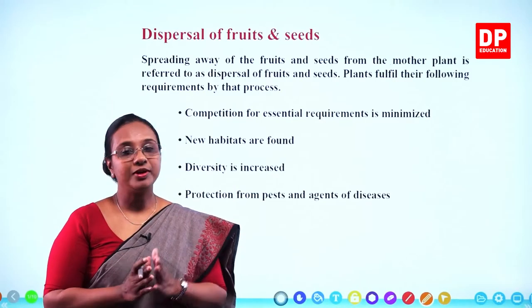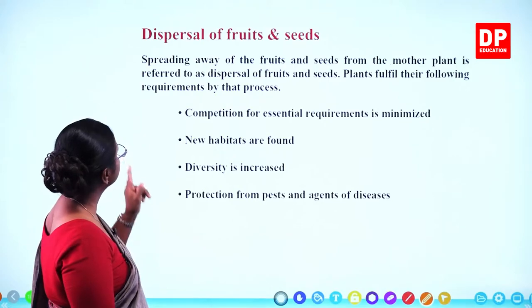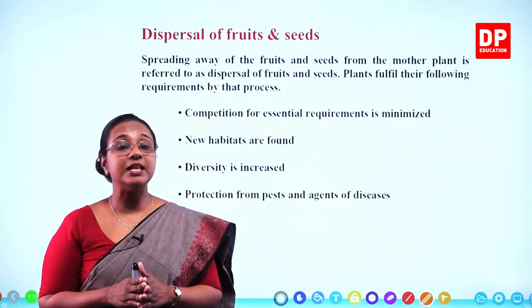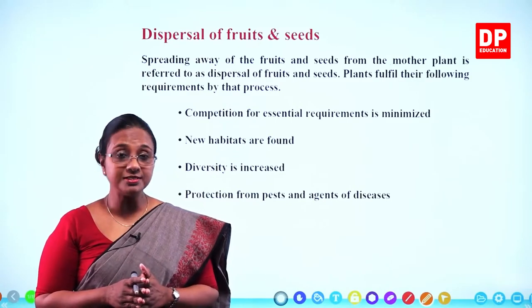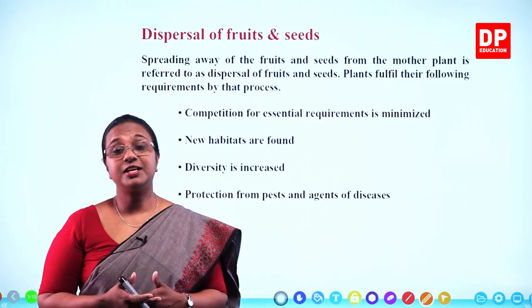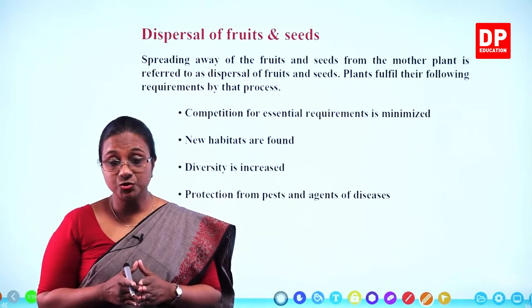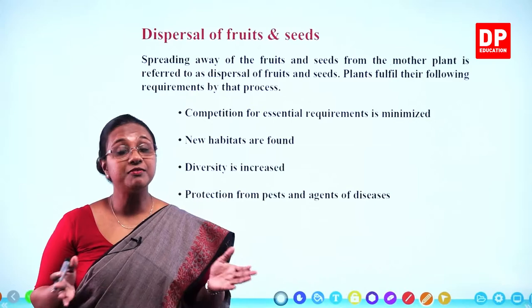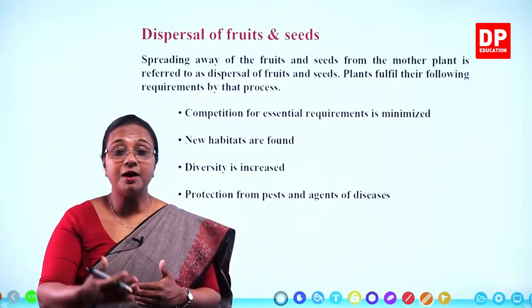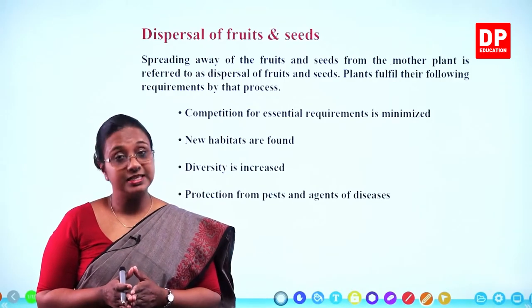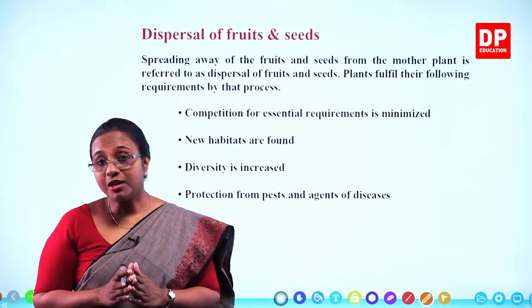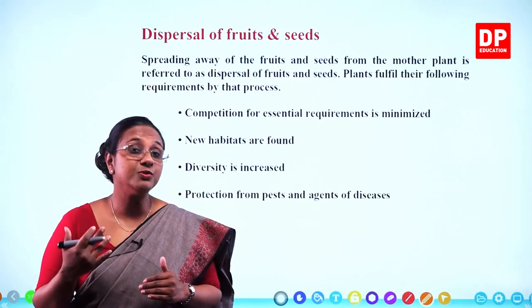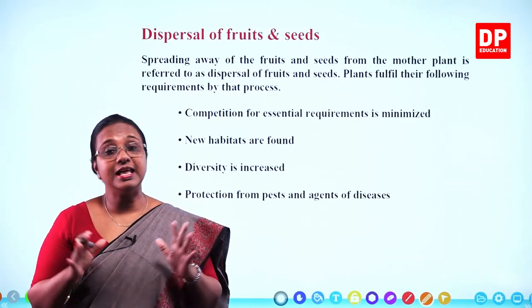Hello, dear students. Today we will be discussing dispersal of fruits and seeds. In the previous chapter, we discussed how pollination takes place, the structure of flowers, the process of pollination, and the different agents of pollination. We also discussed fertilization and how the ovary becomes the fruit and the fertilized ovules become the seeds.